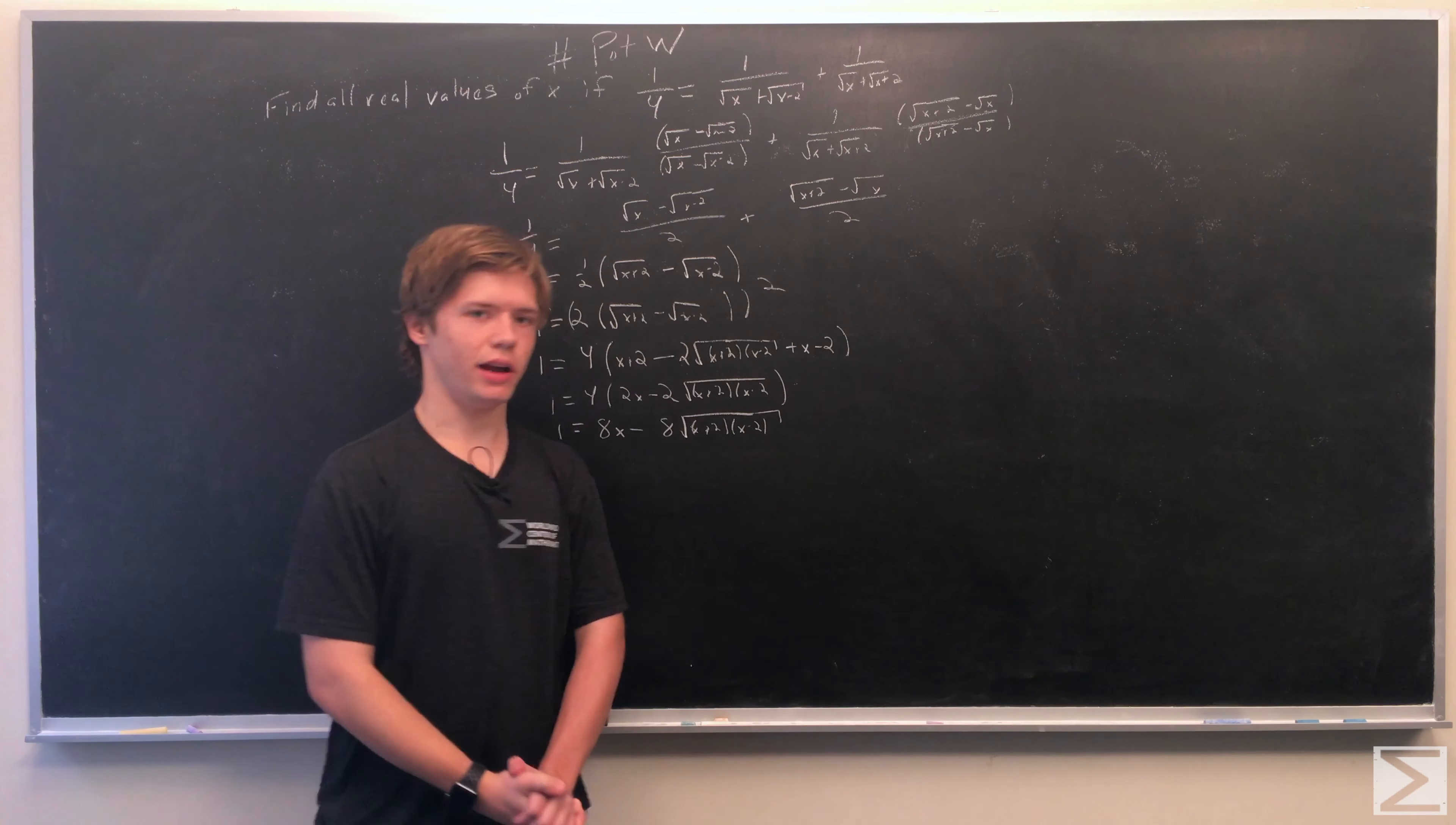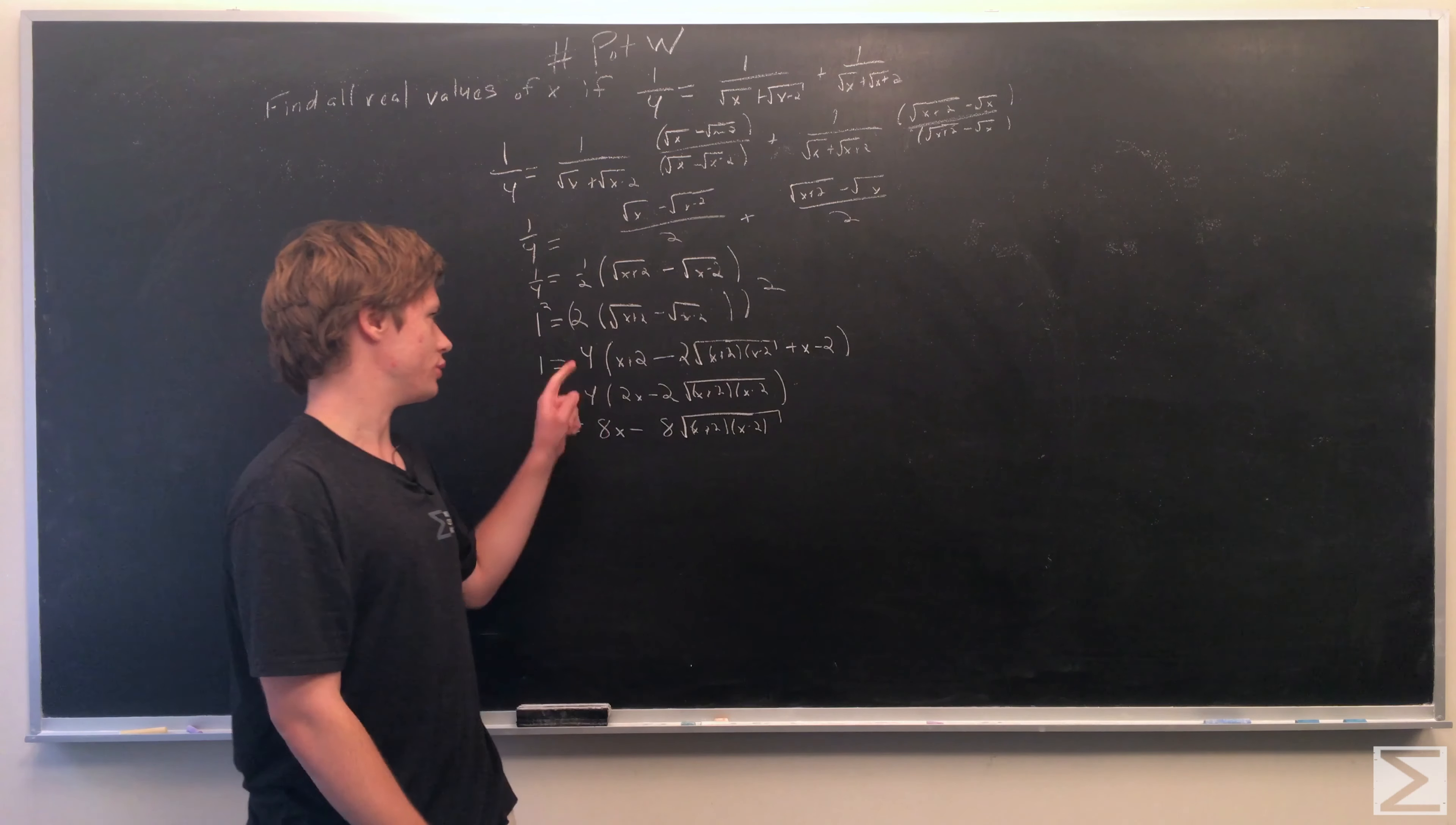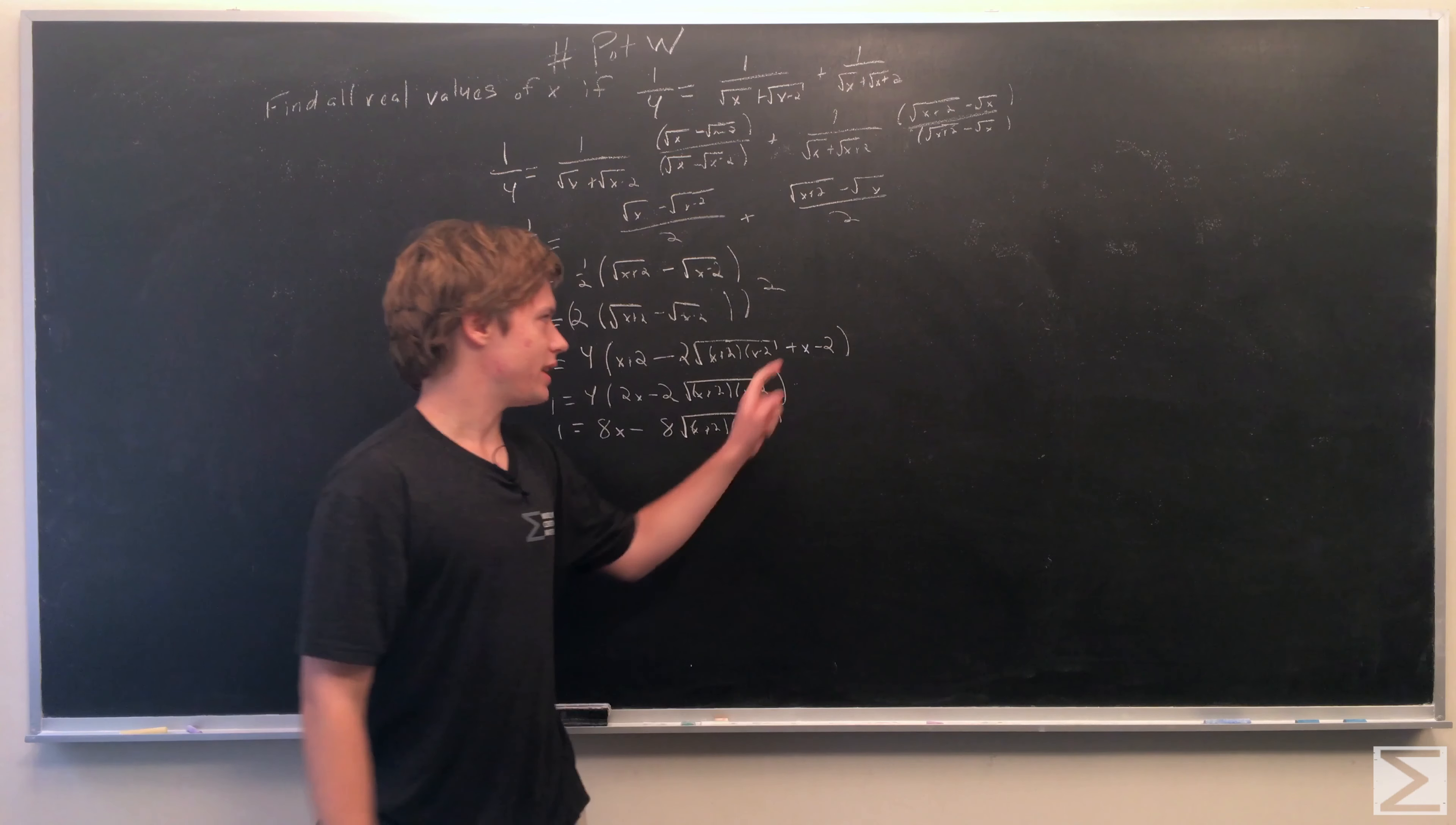After squaring both sides, 1 squared equals 1. For the right side, we square the 2 to get 4, then square the terms in parentheses. FOILing gives us (x+2) - 2√((x+2)(x-2)) + (x-2).